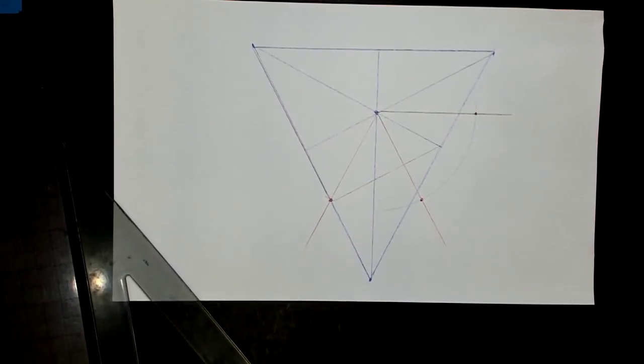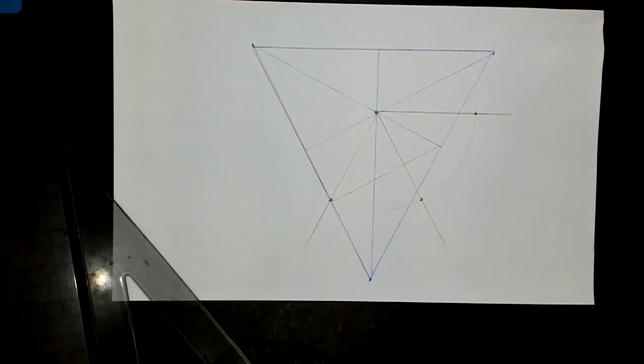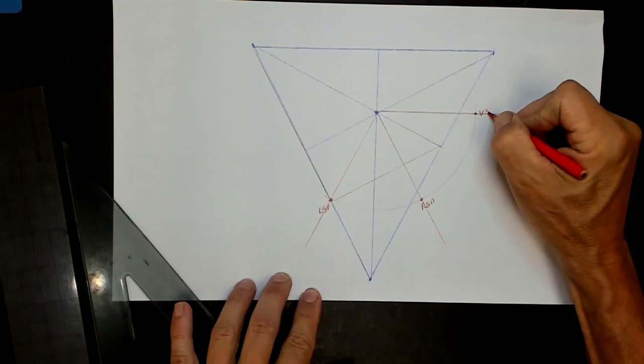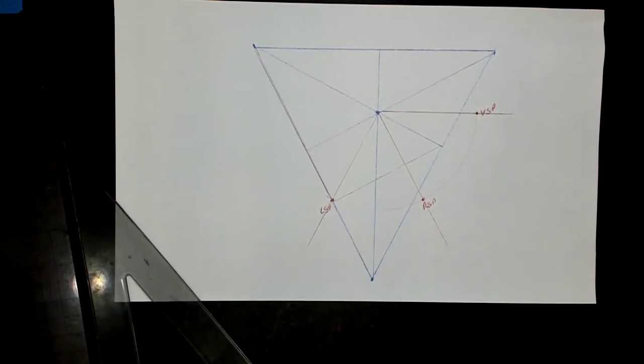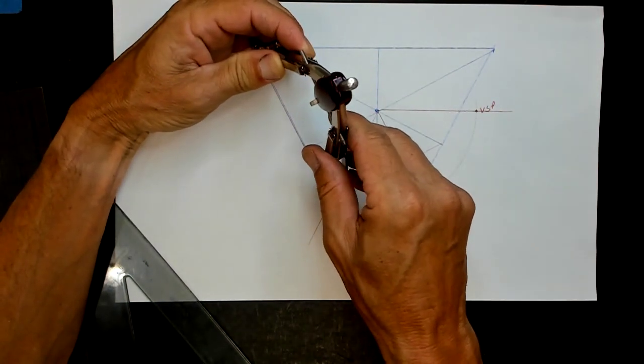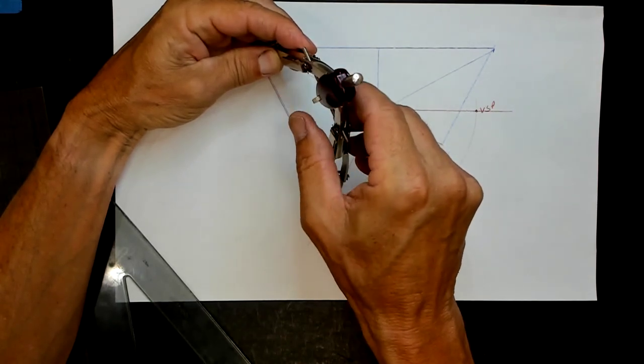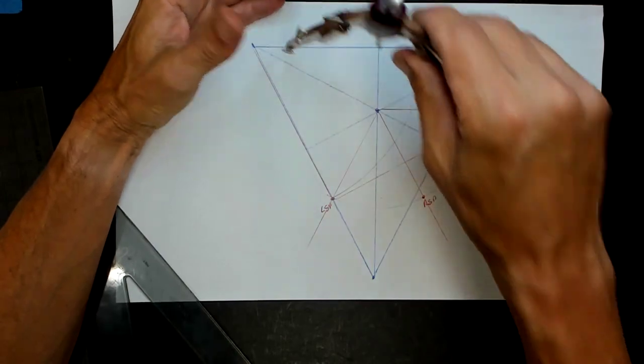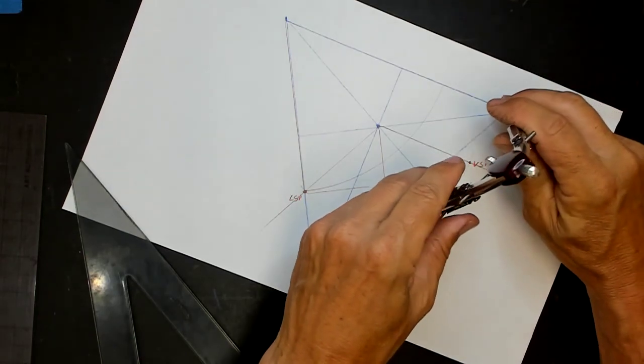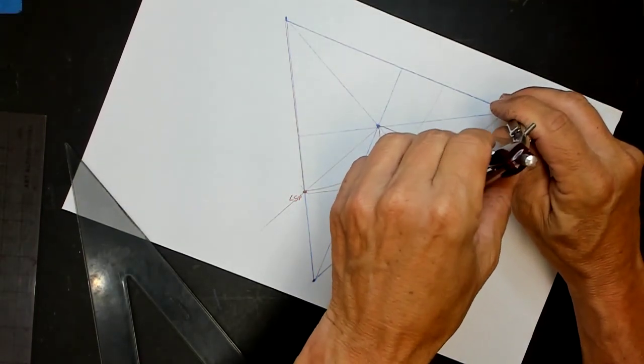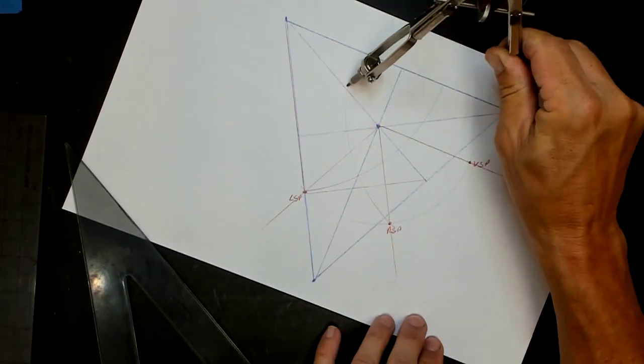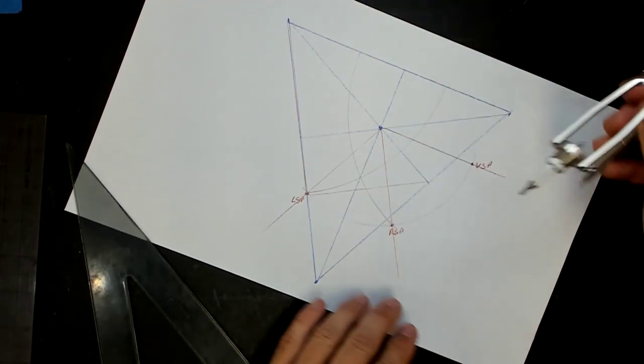Okay, so we made our measuring points by doing this. I guess I'll label this. This is left station point, right station point, and a vertical station point. We found our measuring points by taking the distance from the vanishing point to the station point, taking that distance and bringing that up to the horizon line. And the same thing for the right measuring point. We take this distance. I'm going through that really fast, but the other videos talk about this in a little more detail.